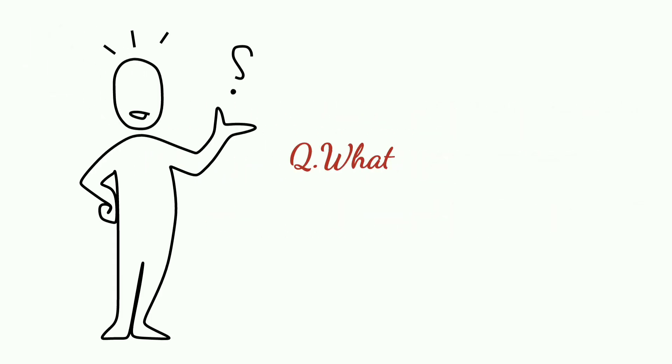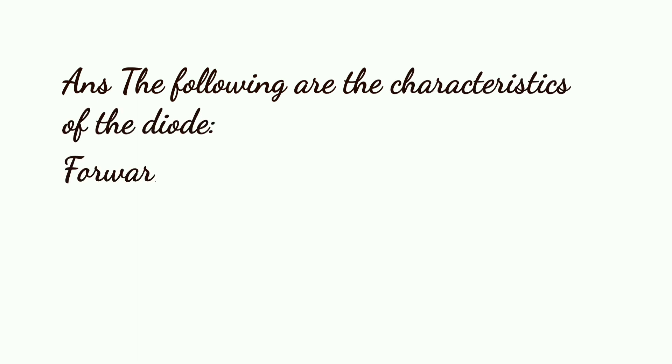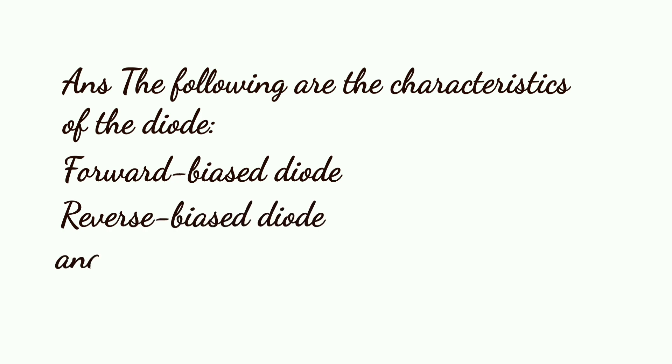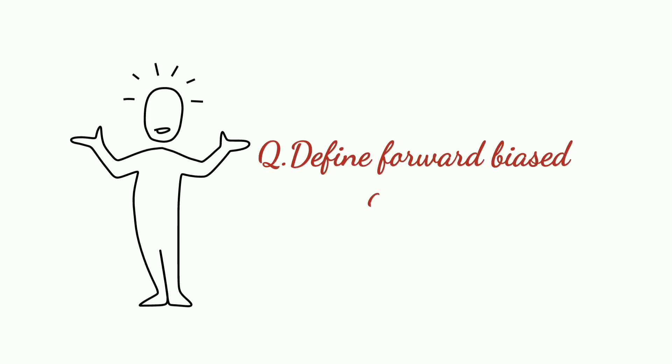Next question: What are the characteristics of the diode? The following are the characteristics of the diode: first is Forward-biased Diode, second Reverse-biased Diode, and third is Zero-biased Diode. Next: Define Forward-biased Diode.